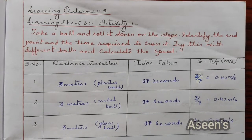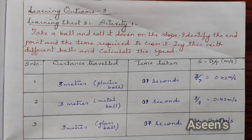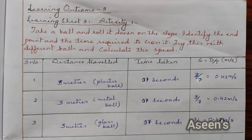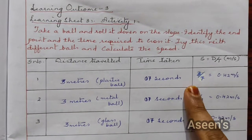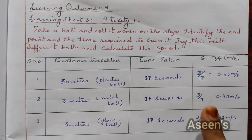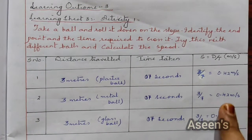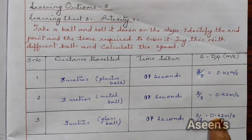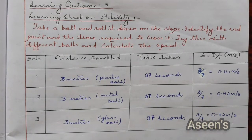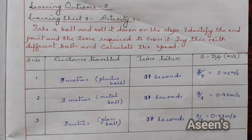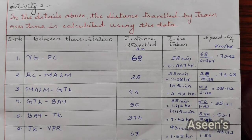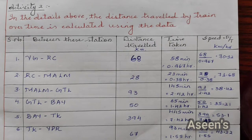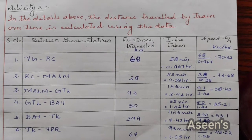It was roughly 7 seconds for all 3 cases. The speed calculation: 3 meters divided by 7 seconds, and hence the speed is supposed to be 0.42 meter per second. Moving on to activity 2.